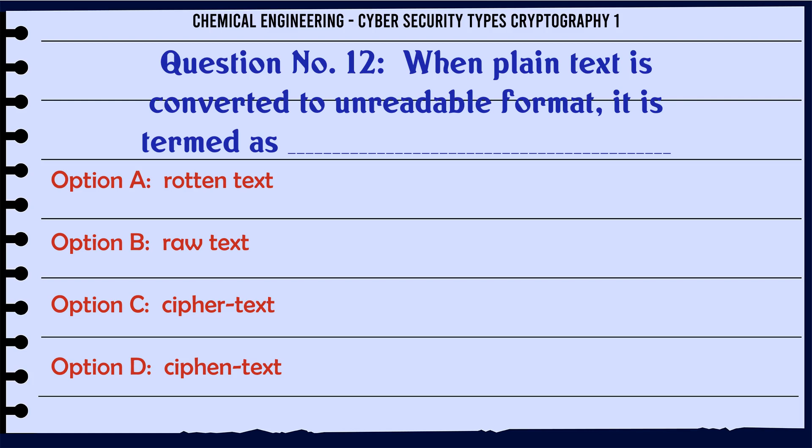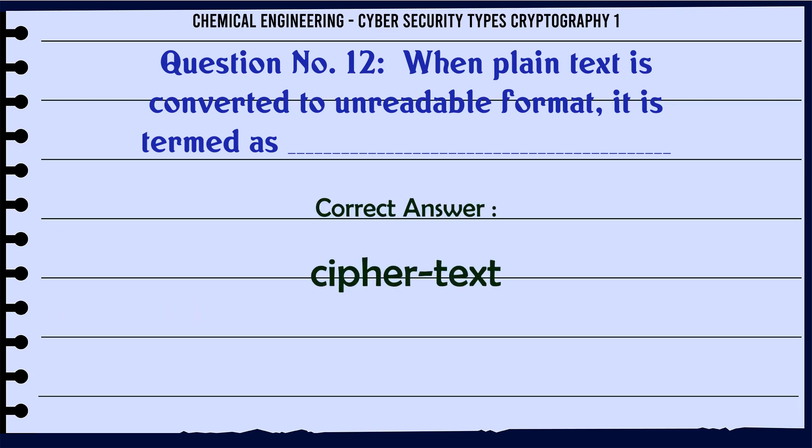When plain text is converted to an unreadable format, it is termed as: A) Rotent Text, B) Raw Text, C) Cipher Text, D) Cipher Text. The correct answer is Cipher Text.